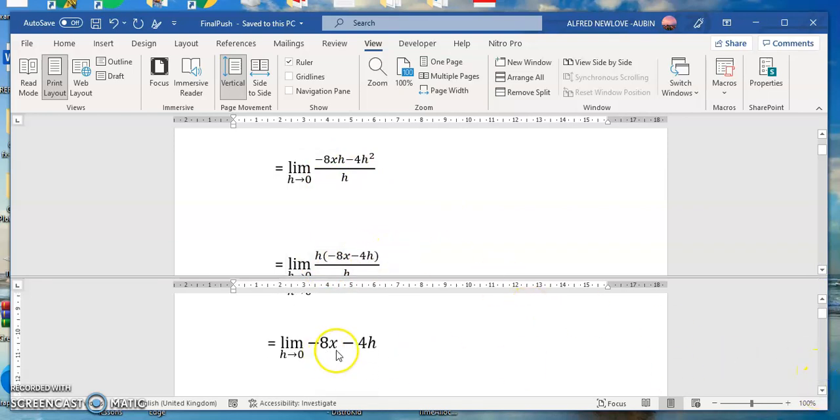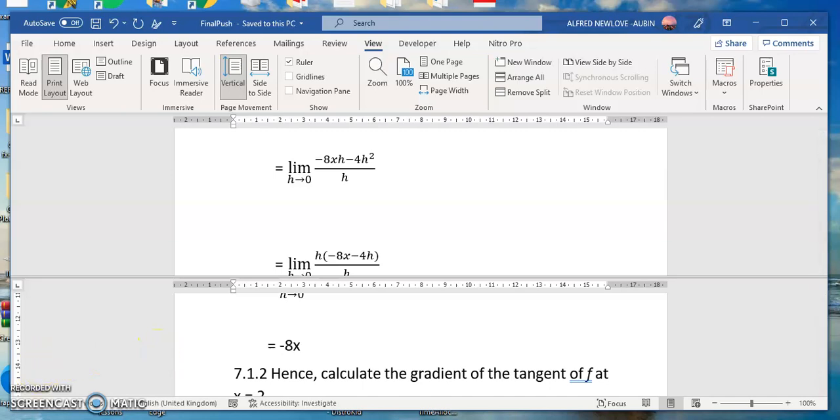Then you have -8x minus 4h, then we are going to have -8x. All right, goodbye.